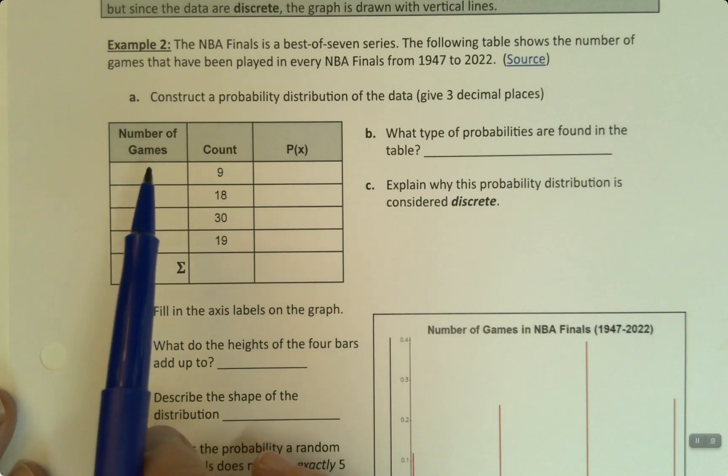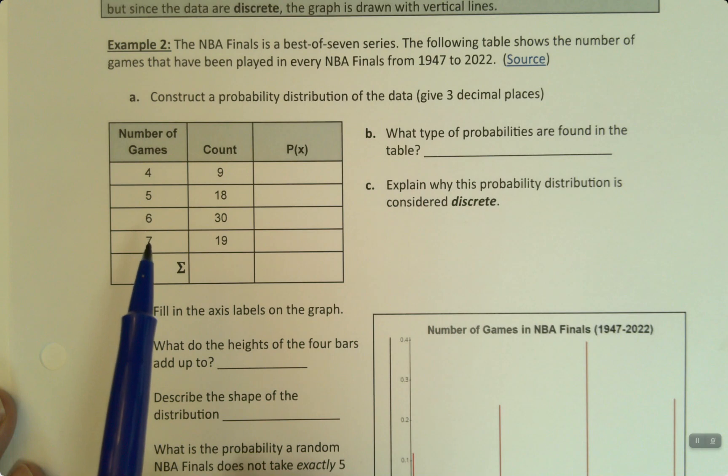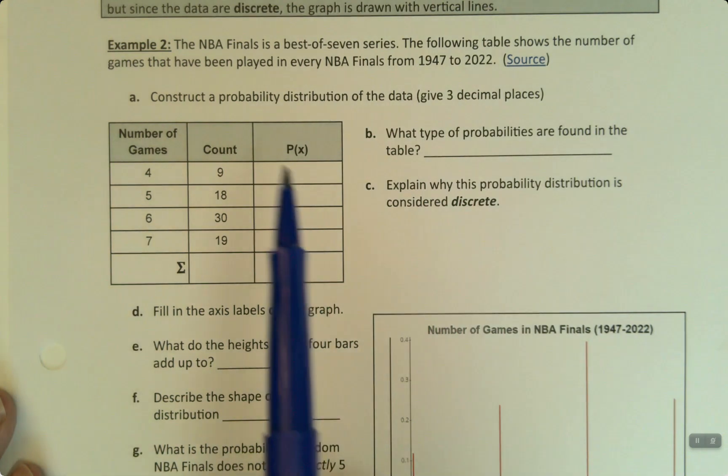These are the number of games it could take to win. It could take four games to win, which is called a sweep. Then five, which means the winner got four games and the loser got one game. Six, the winner got four and the loser got two. And seven, the winner got four and the loser got three.